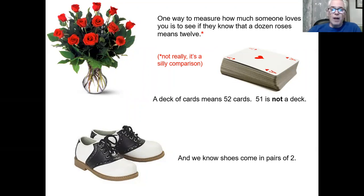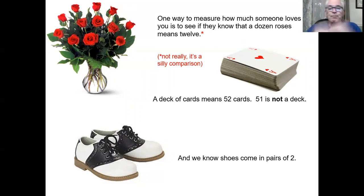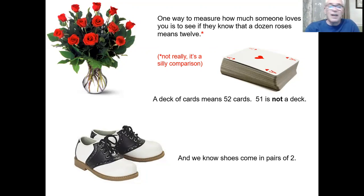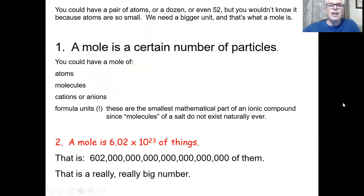I went to the store to buy a new pair of sneakers. I have two feet, and shoes come in pairs — a pair means two. I could buy two sneakers or a pair of sneakers; it's the same thing. These shoes are from the 50s and early 60s — called saddle shoes. Now, a mole is a word, but it's also a number. At first it's just a number.